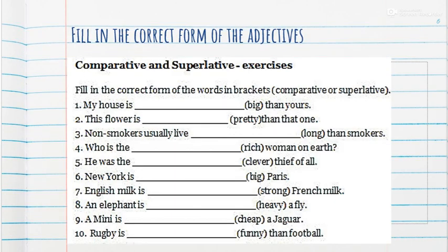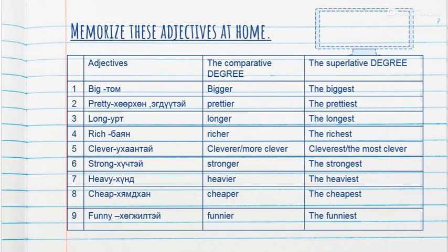Next: fill in the correct form of the adjectives — big, pretty, long, rich, clever, strong, heavy, cheap, funny — and translate at home. Memorize these adjectives at home. Good luck, see you next time, my students.